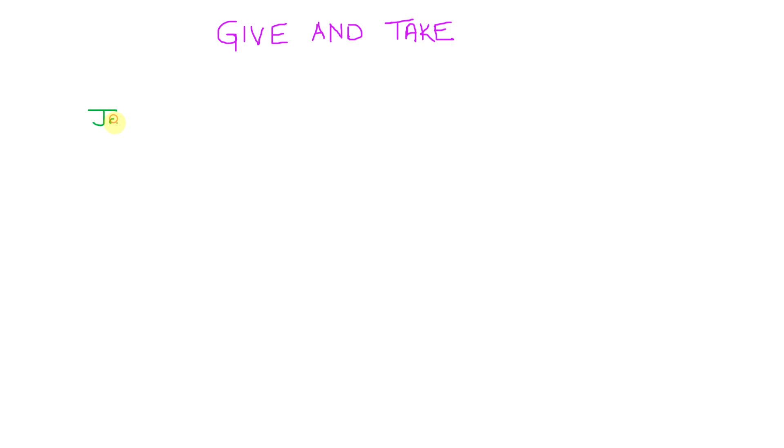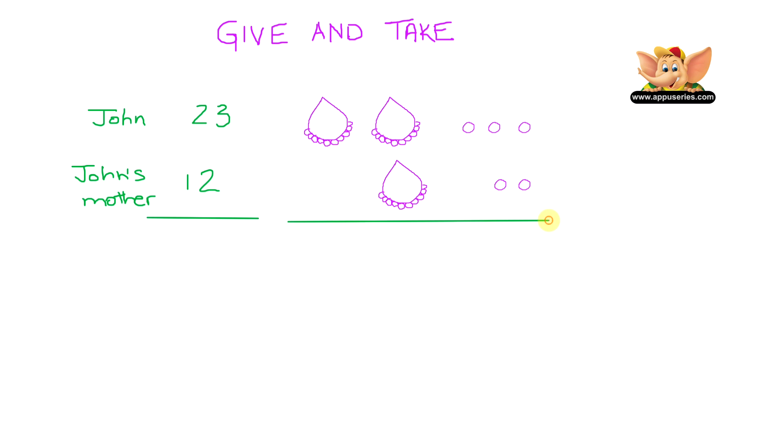Now we know from before, John has 23 pearls. Let's say he decides to give 12 pearls to his mother. So now, how many is he left with? So we know that John has 2 necklaces and 3 loose pearls. Now if we look at John's mom, if she has 12 pearls, that means she has 1 necklace and 2 loose pearls.